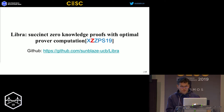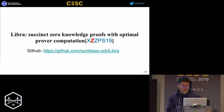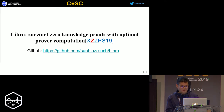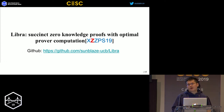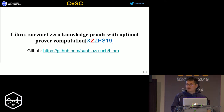For the next part, I will introduce Libra, published in Crypto 2019. I should clarify it is not related to anything about the Libra project in Facebook — we submitted our paper in February and Facebook announced their project in April, so it's just a nice coincidence. Libra is a zero-knowledge proof with optimal prover computation, and it is open source on GitHub.